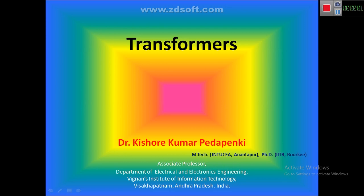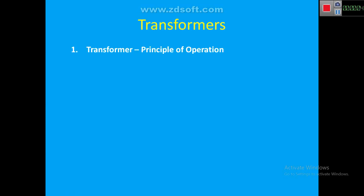Today let us discuss transformers. The first topic is principle of operation, which describes how the transformer transforms electrical energy from one circuit to the other. Basically, the transformer is a static device which transforms electrical energy from one circuit to the other through the medium of magnetism — the magnetic medium.